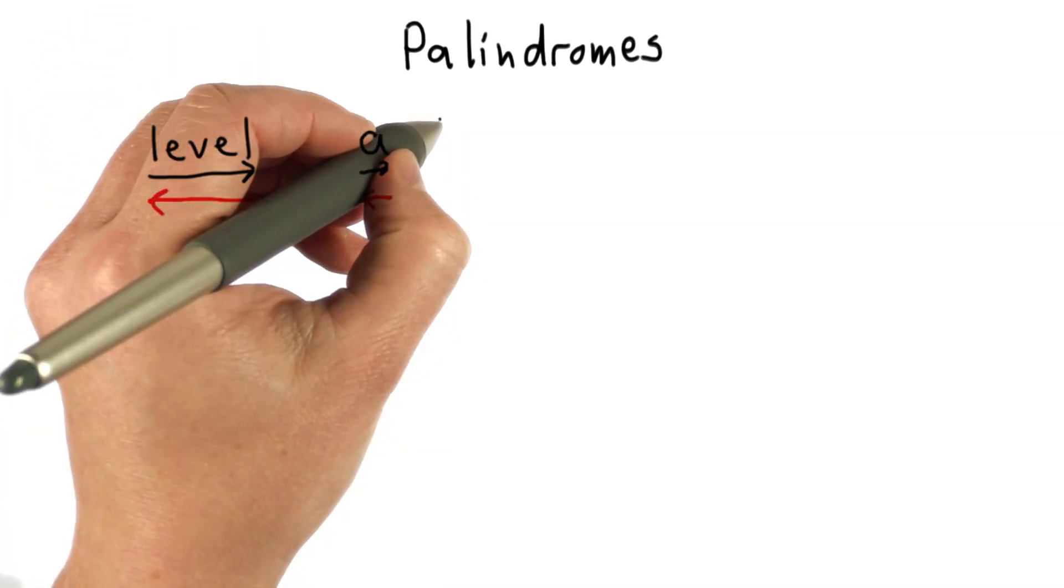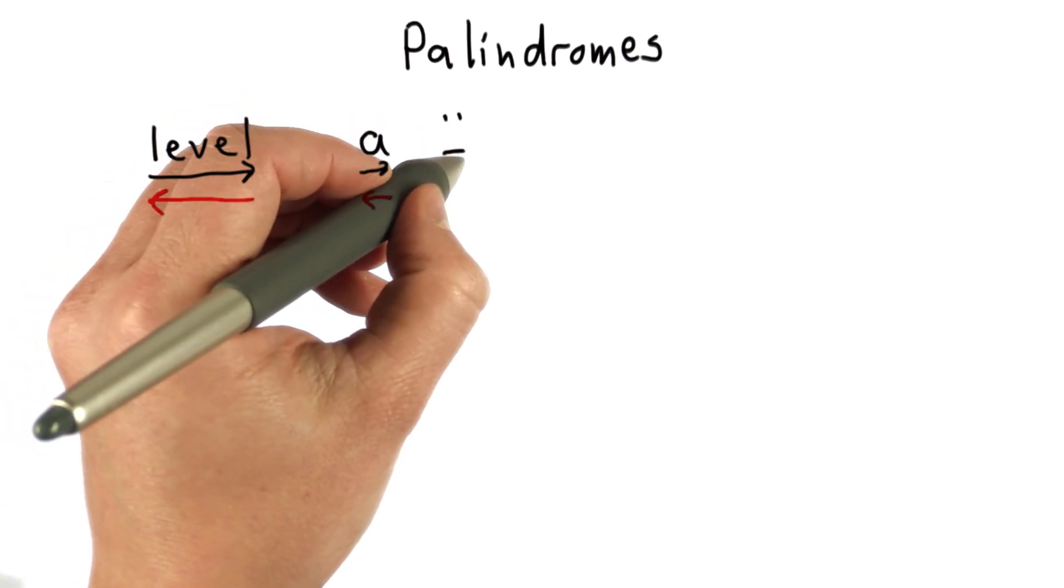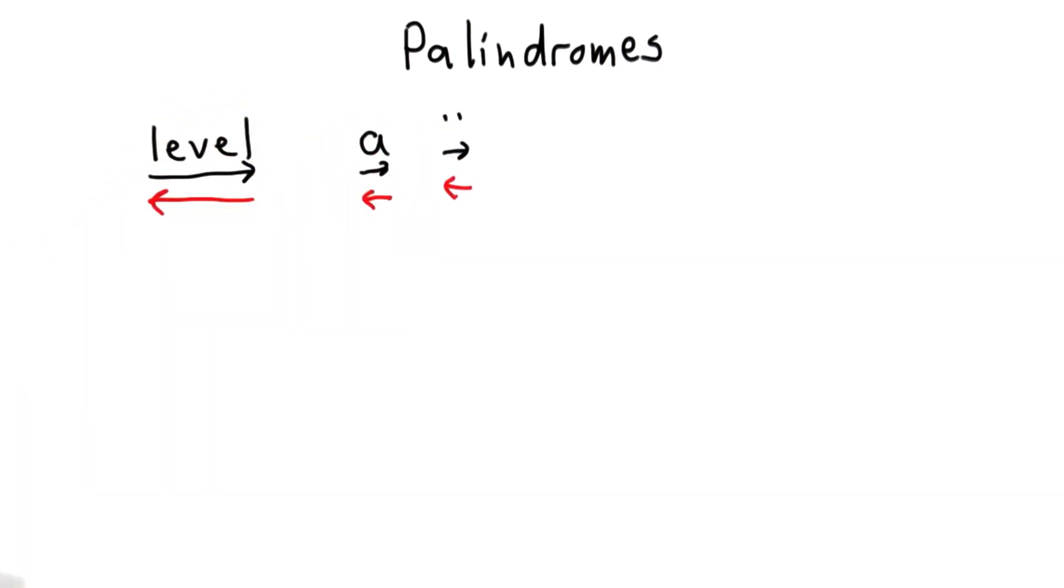The empty string is also a palindrome. If we read the empty string forward, we have the empty string. If we read the empty string backward, we also have the empty string.